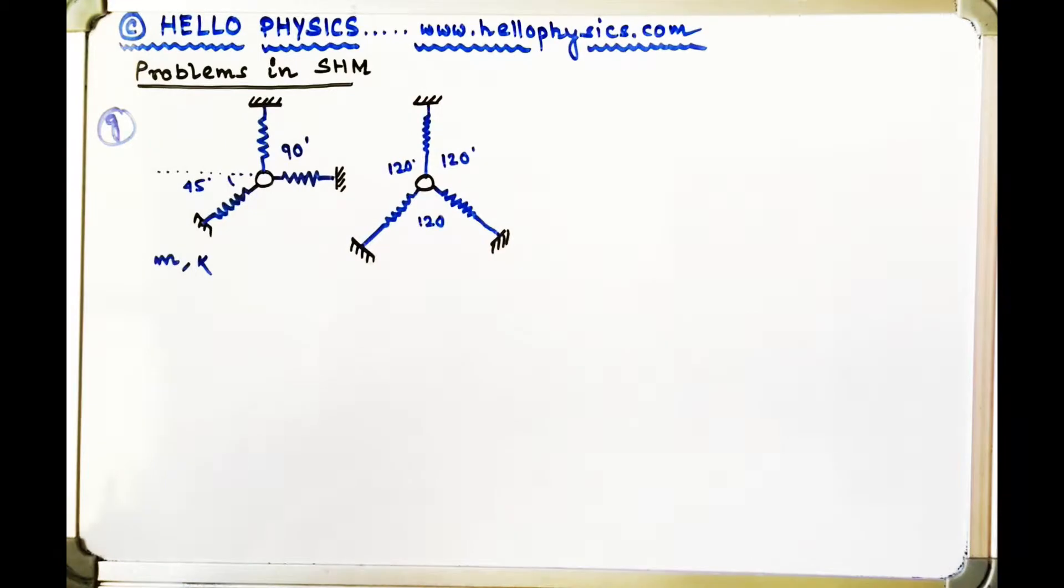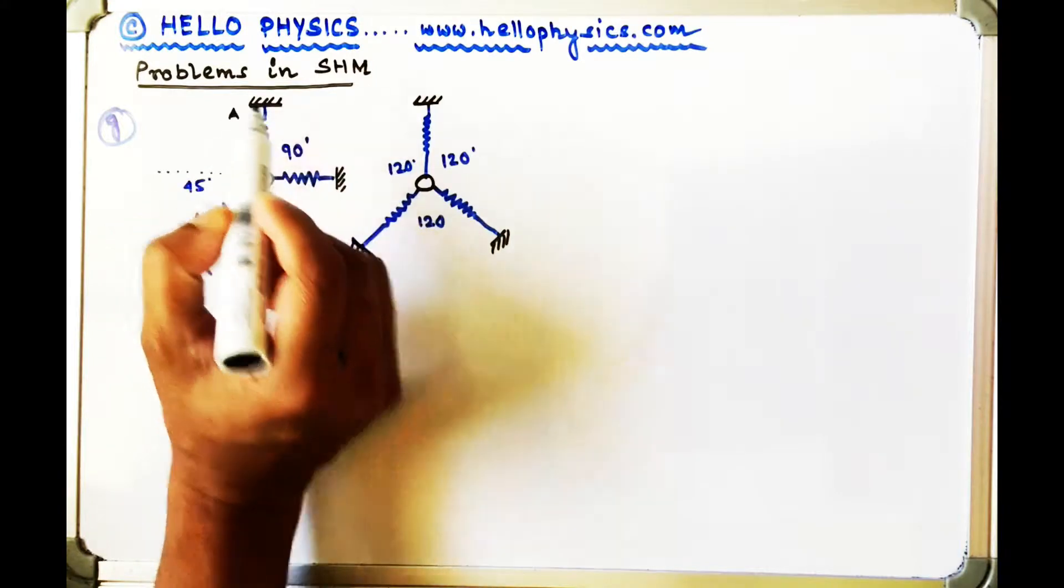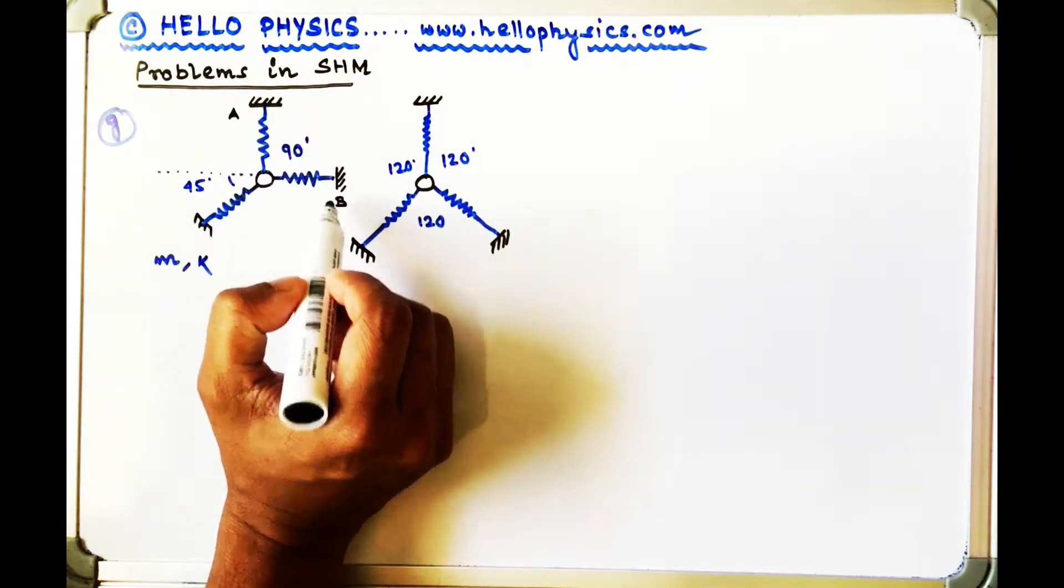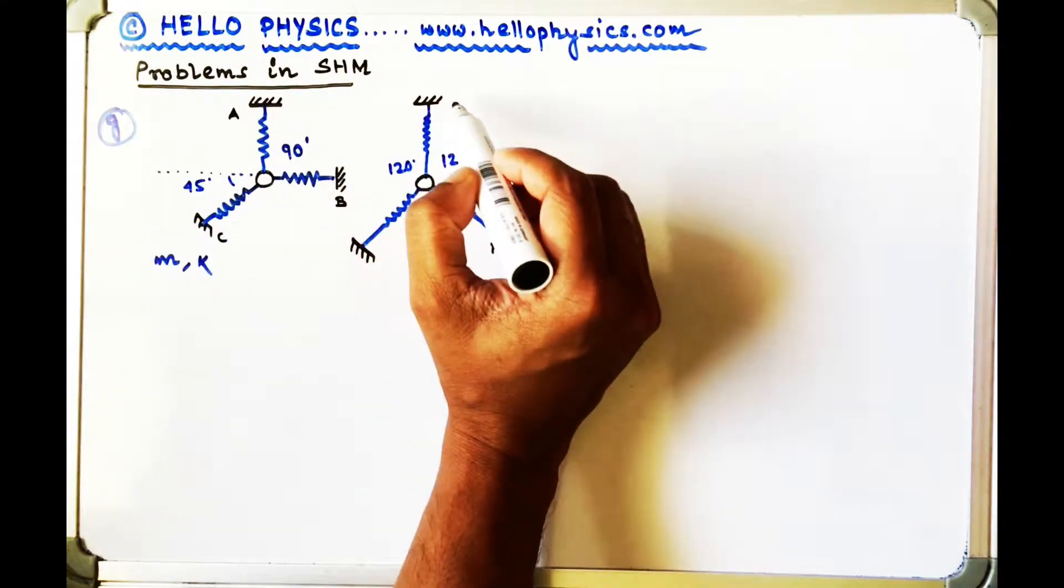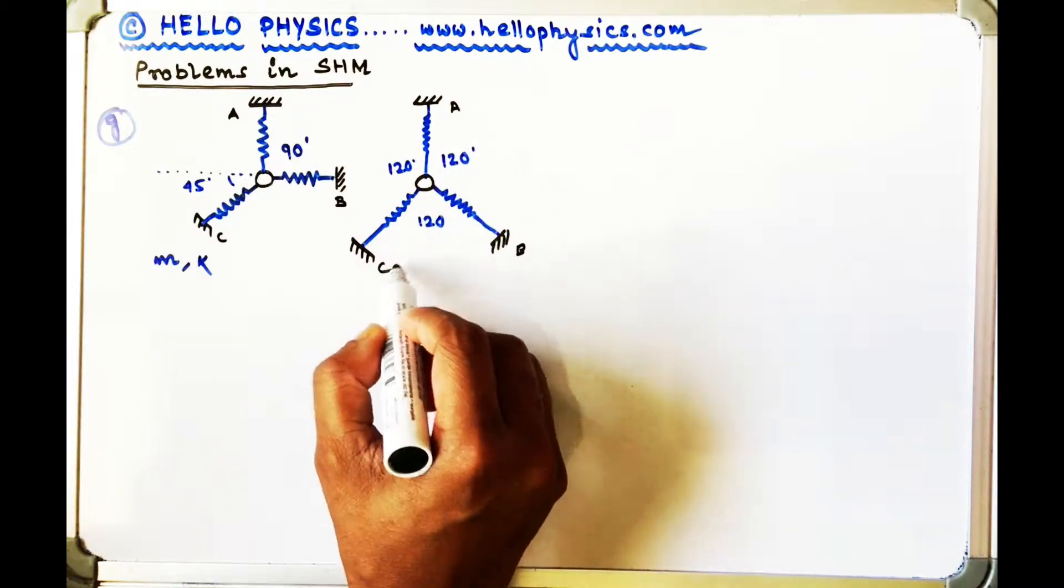Now, in each of the three cases, what is done is as follows. Let me first name the springs. Let's say this is spring A, this is spring B, this is spring C. Here, this is spring A, this is spring B, and this is spring C.